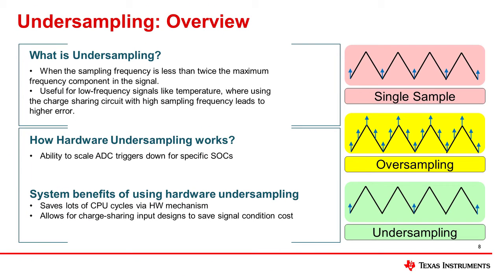Now let's move to the undersampling feature. Undersampling occurs when the sampling frequency is less than twice the maximum frequency component in the signal. The hardware undersampling feature enables trigger decimation, allowing system designers to designate certain sensor inputs for infrequent sampling and freeing up more system capacity for high-frequency control loop processing. As an example, many systems feature high-impedance signal inputs to the ADC, as the output from a high-voltage source is stepped down to the ADC voltage range using a resistor divider network.